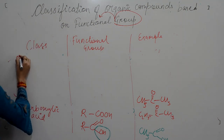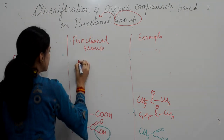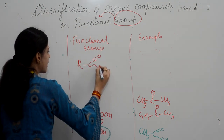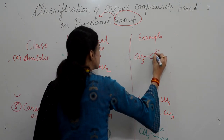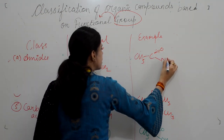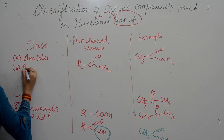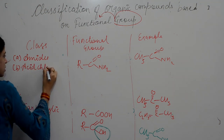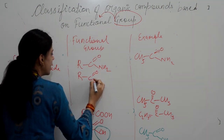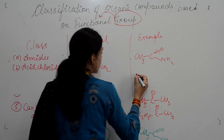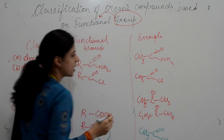The first derivative is amides. In amides, the OH group is replaced by an NH2 group. Example: acetamide (CH3-C(=O)-NH2). In acid chloride, the OH group is replaced by Cl. Example: acetyl chloride (CH3-C(=O)-Cl).